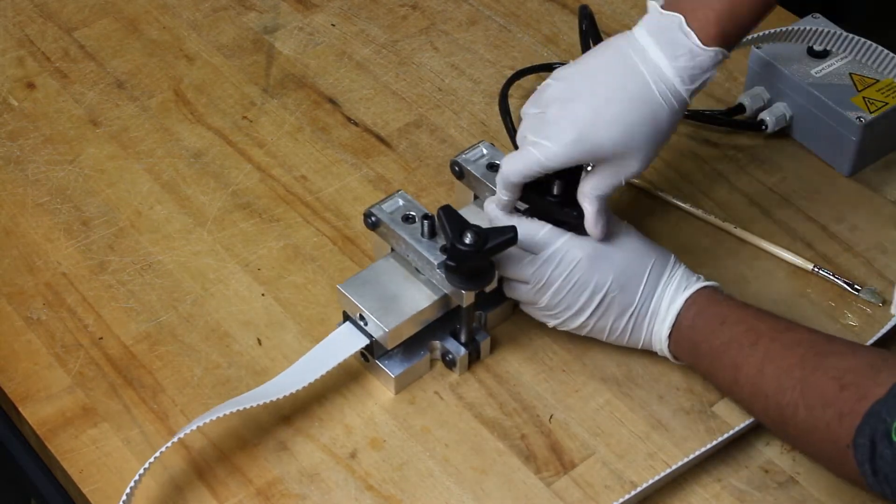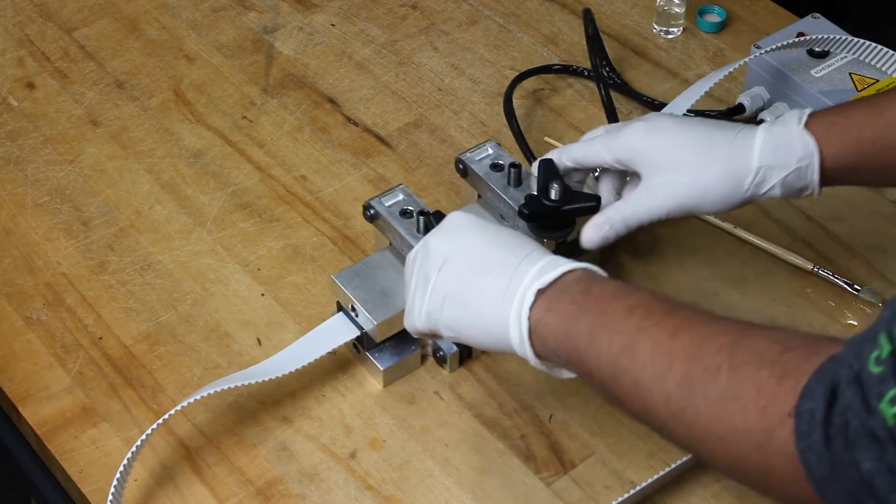Firmly screw down the thumb screws and press the button on the control box to begin the welding process.